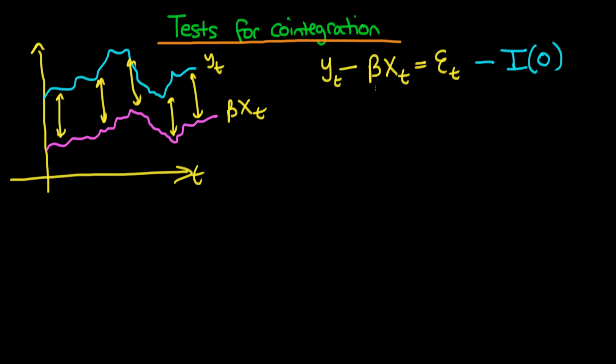So that's all fine and well when we actually know the parameter beta. But most of the time we actually don't know the parameter beta. We actually need to estimate it. It might be the sole purpose of estimation to estimate the particular parameter beta.